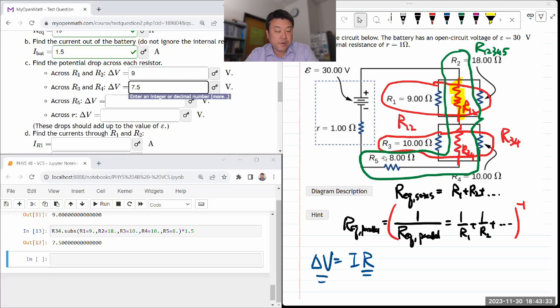Across R5, that's easy, 8 times 1.5. Oh, I can't even do that in my head. That's 12, I think. Yes.